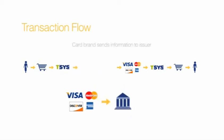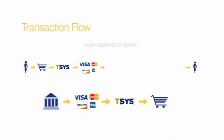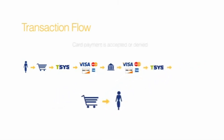The card brand sends the card and purchase information to the bank or institution that issued the card. The card issuer approves or denies the transaction request and sends the response back to the card brand, which in turn sends the response to the payment processor, which notifies the business or merchant. The entire transaction takes place in a matter of milliseconds, and the cardholder's card payment is accepted or the cardholder is given the chance to pay another way.